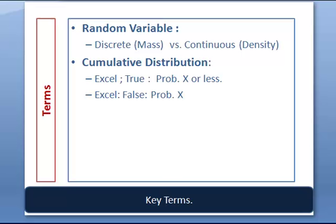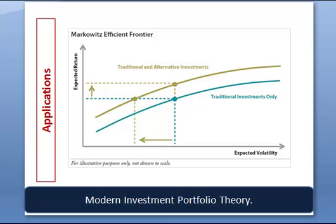A random variable means I can substitute any value x into a probability distribution function. Discrete random variables can be counted, like dice values one through six. Continuous variables, like time, use a density function; discrete ones use a mass function. A cumulative distribution adds probabilities together — in Excel, using TRUE gives the probability of x or less, while FALSE gives the probability of exactly that value of x.